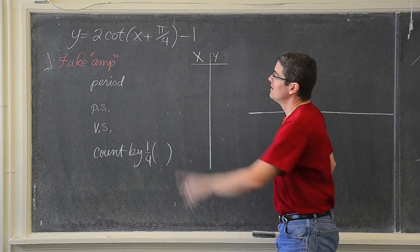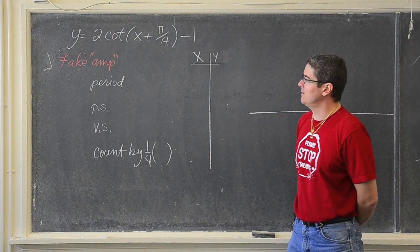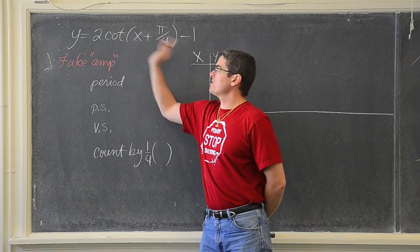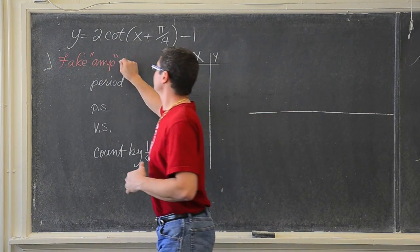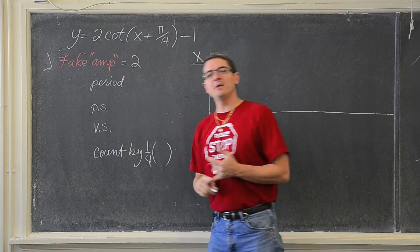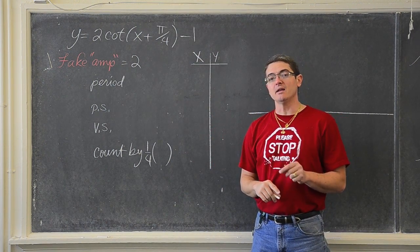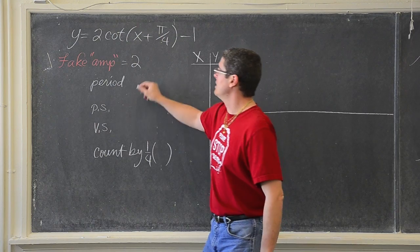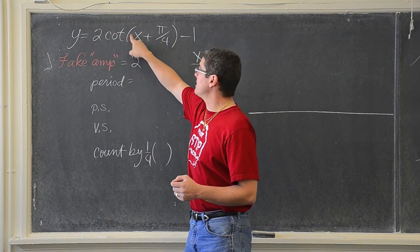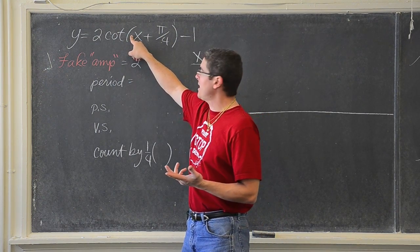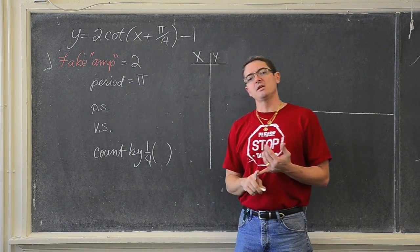Let's do our second example: y = 2cot(x + π/4) - 1. For this cotangent graph our fake amplitude is going to be 2. Tangent and cotangent have a period of π, not 2π. So the period of this graph is going to be π divided by b, the value in front of x, which is simply π.